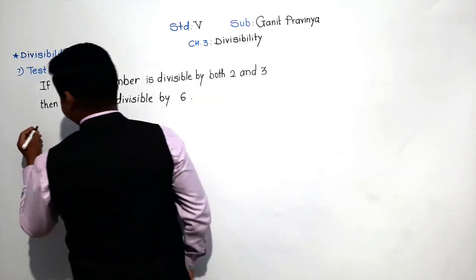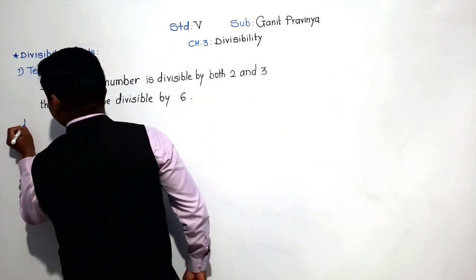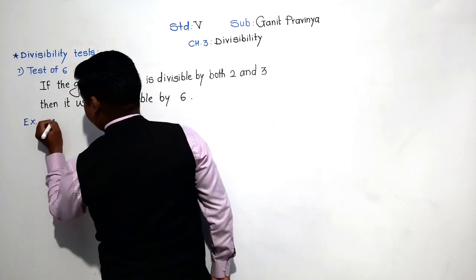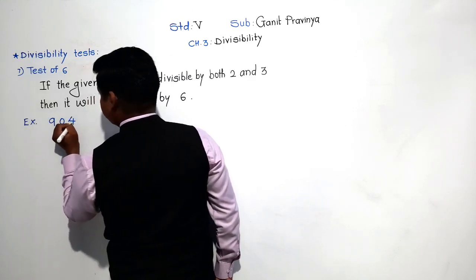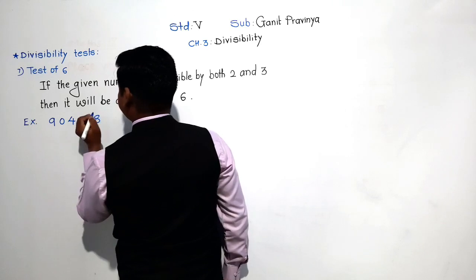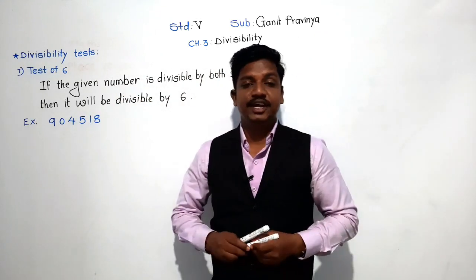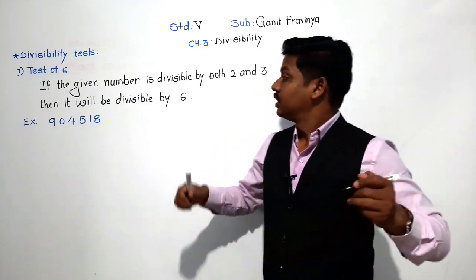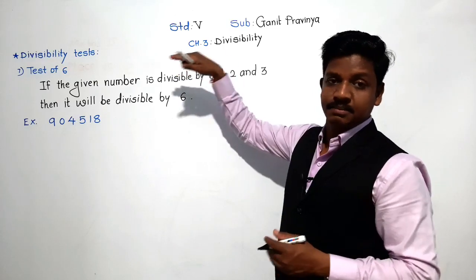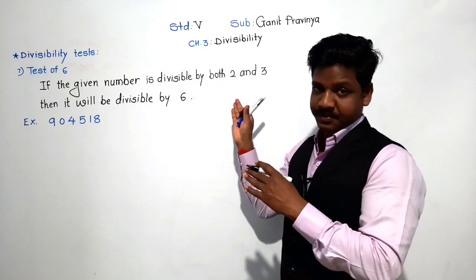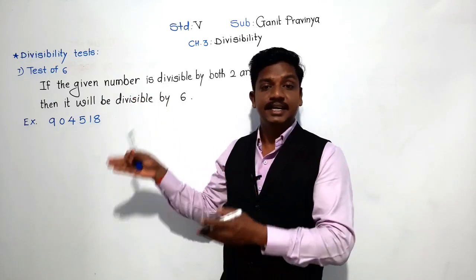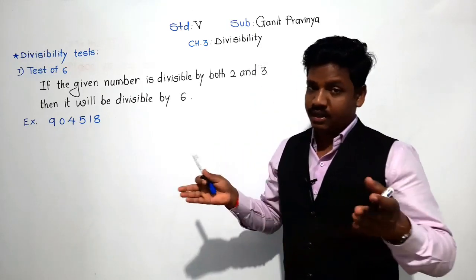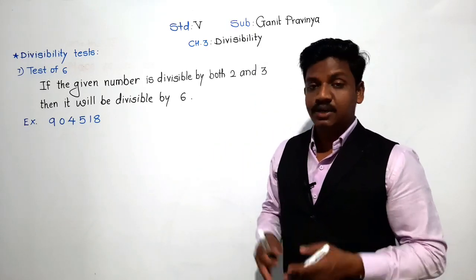Let us see an example. We will take the number 9,4518. We have to check whether this number is divisible by 6 or not. As given in the test, the number should be divisible by both 2 and 3. So here we have to apply the test of 2 and 3.